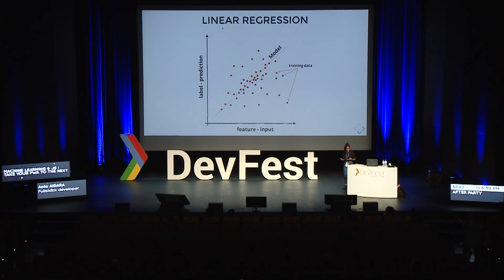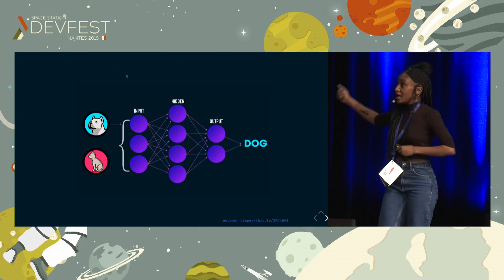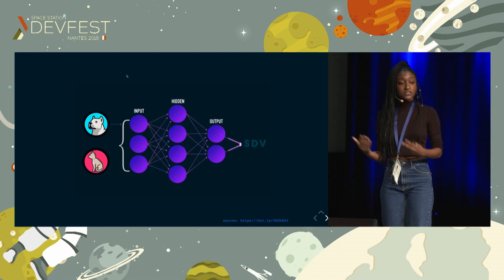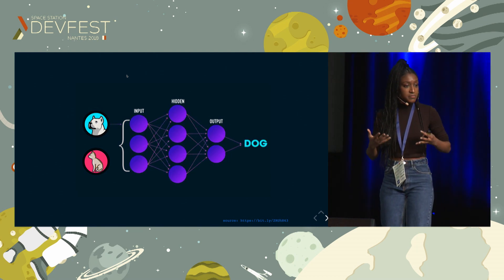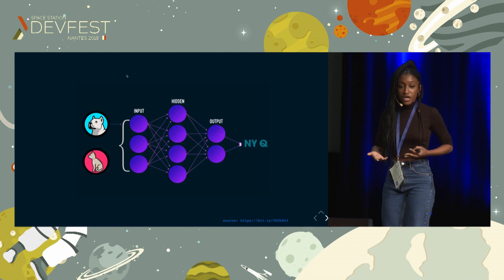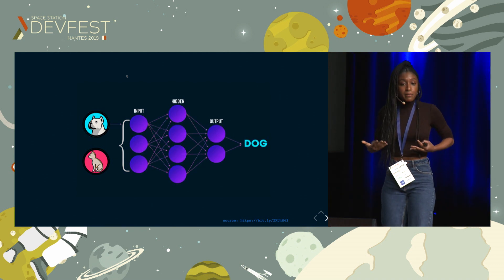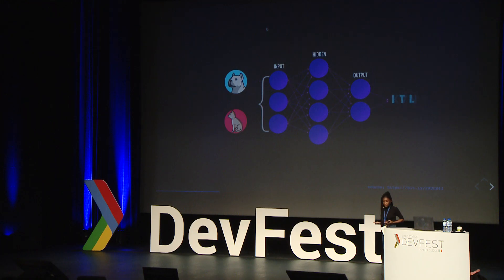Once your model is trained, what you will do is basically feed it with some input, and it will give you an output. As illustrated in this image, here we have a neural network model with three layers, and we feed it with some images — images of animals — and we expect our model to tell us which animal it is. For example, I feed it with the image of a dog, and I expect my model to tell me that it is indeed a dog with a certain accuracy, because remember, it's a prediction.